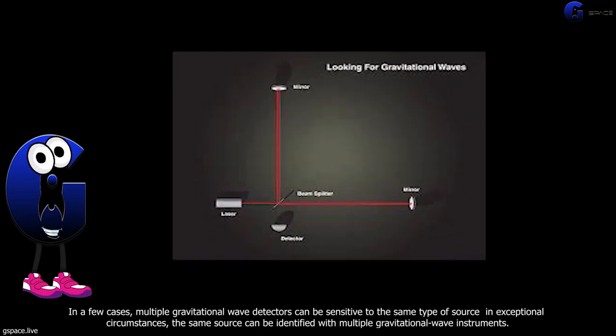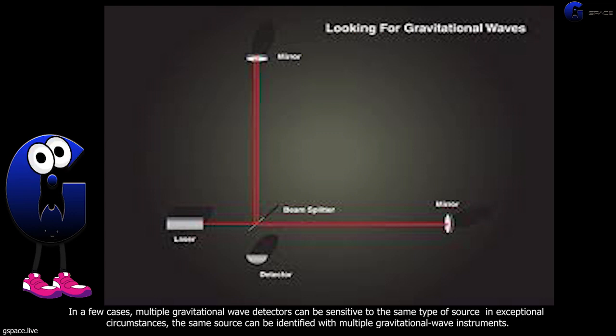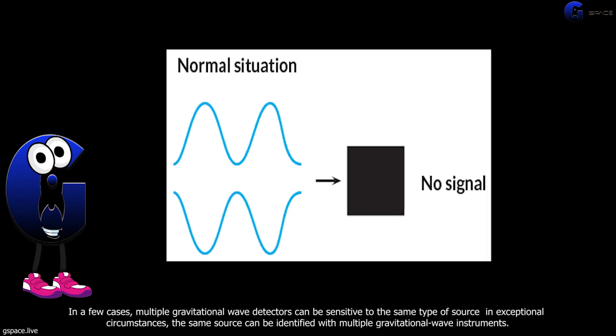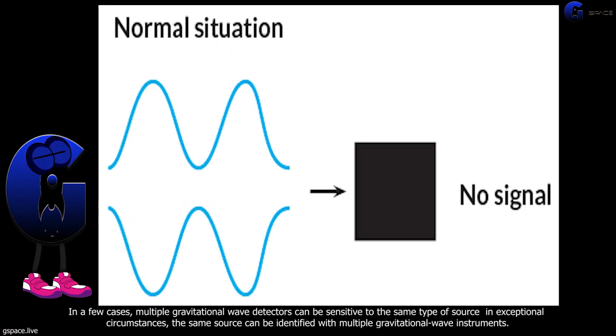In a few cases, multiple gravitational wave detectors can be sensitive to the same type of source in exceptional circumstances. The same source can be identified with multiple gravitational wave instruments.